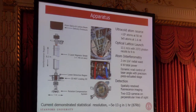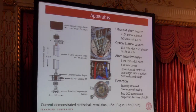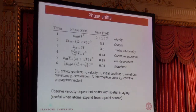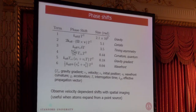Our current record statistical resolution, in one hour, is just below 10 to the minus 12 of little g. Where we hope to be in the next few months is an order of magnitude better than that. If you run through the standard arithmetic of calculating what can influence the phase of the atomic wave packets when they separate, this is the kind of table you arrive at.